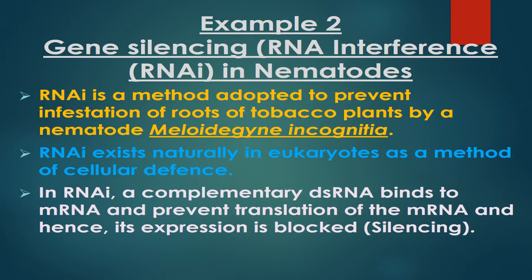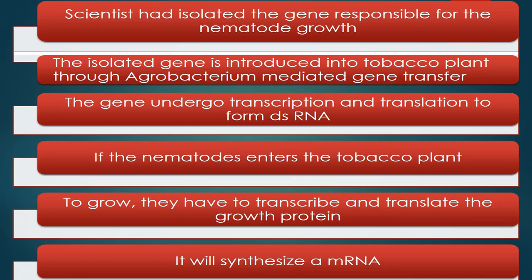Now let us see how to obtain a nematode-resistant tobacco plant. This technique is known as RNA interference. In all eukaryotes there is a defense mechanism that works by using RNA. Double-stranded RNA acts as a defense mechanism to differentiate and silence foreign sequences. Scientists isolated the gene responsible for the growth of the nematode.